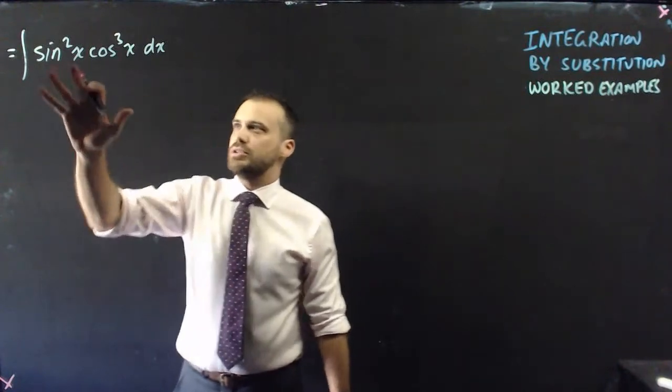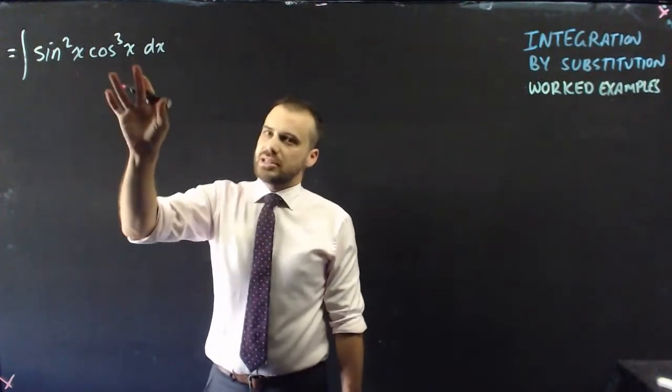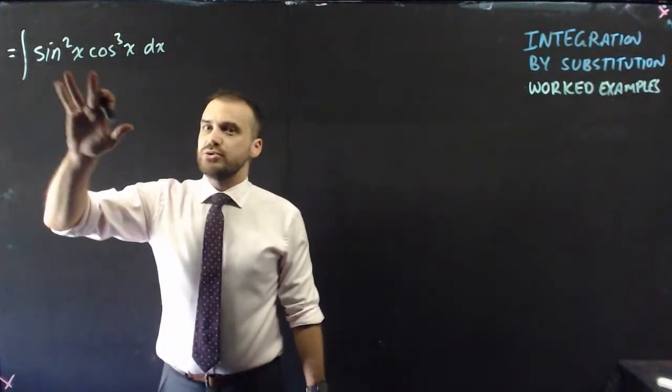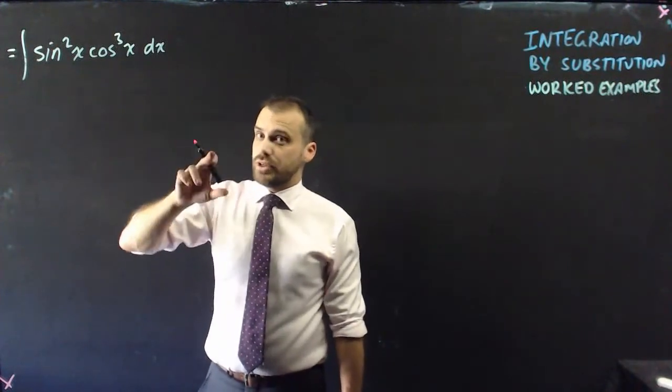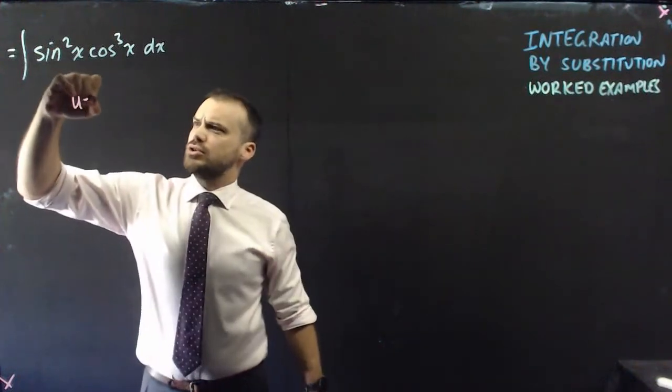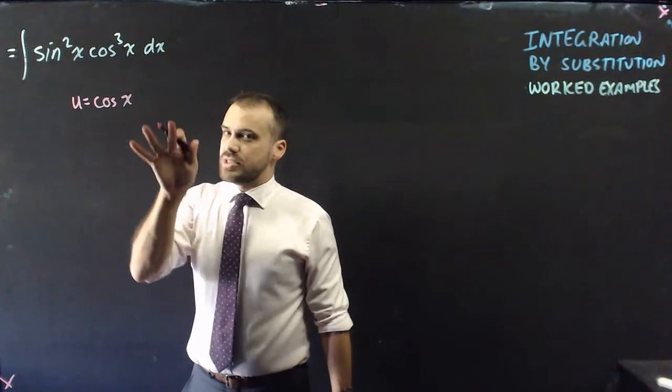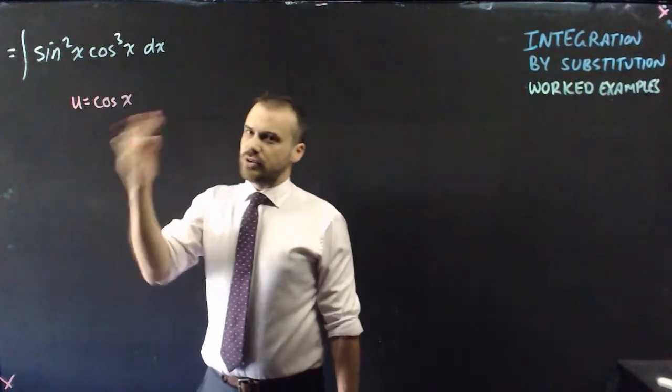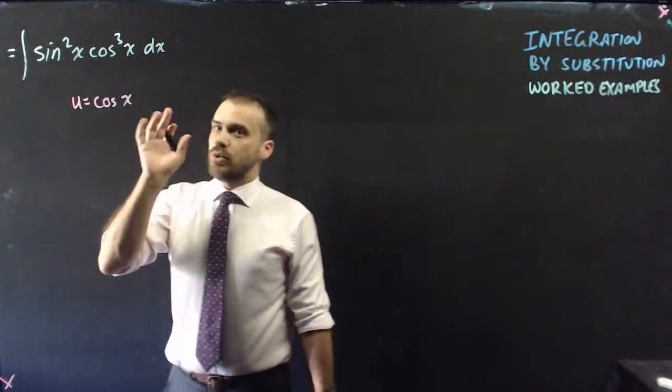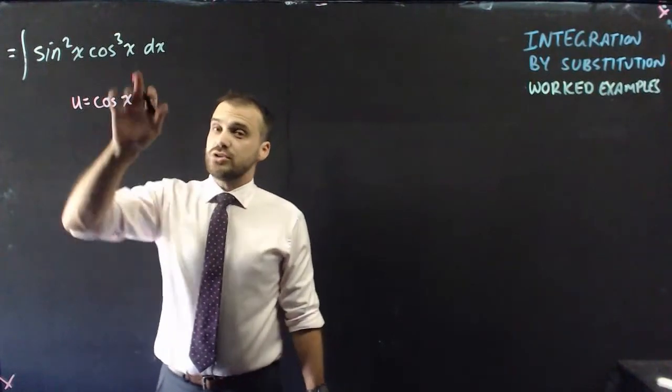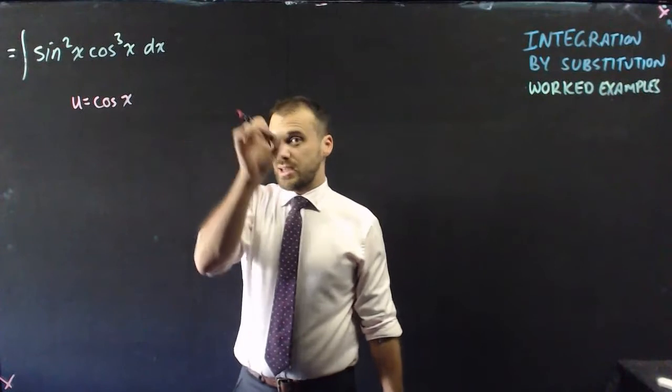Maybe either of them's u. And then you think, well, this one's raised to a higher power. So let's make u cos x. But remember that this is supposed to resemble the derivative of u. So if I said u was cos x, sine squared x does not resemble the derivative of cos x. So what I'm going to instead do is do something really sneaky and split cos cubed x into cos squared x and cos x.